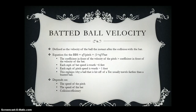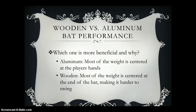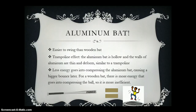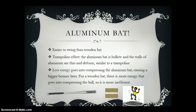The velocity depends on the speed of the pitch, the speed of the bat, and the collision efficiency. For aluminum bats, most of the weight is centered at the player's hands, but for wooden bats, most of the weight is centered at the end of the bat, making it harder to swing. The aluminum bat is easier to swing and has something like a trampoline effect — it's hollow on the inside, the walls are thin, and they deform like a trampoline, so less energy goes into compressing the bat, causing a bigger bounce afterwards.